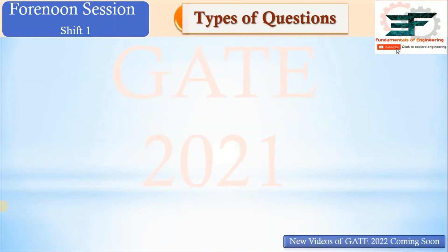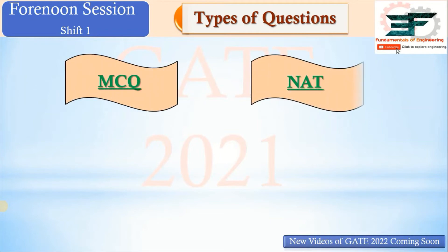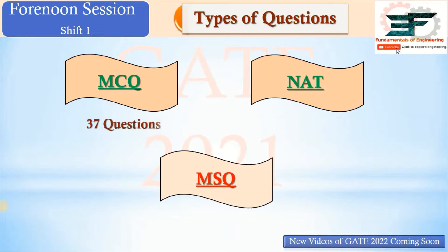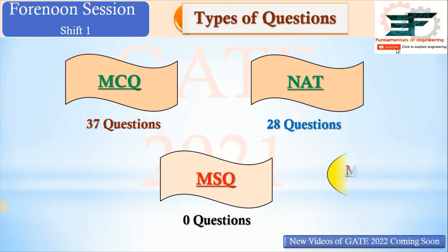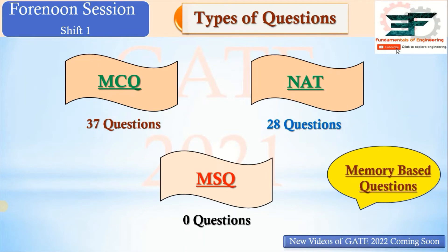For the afternoon session (shift two), there were again three types of questions: MCQ, NAT, and MSQ. Among those, 37 questions were MCQ, 28 questions were NAT, and zero questions for MSQ — so the afternoon session also had no MSQ questions. All questions were memory-based, meaning you need to have your concepts clear. If your basic concepts are clear, you can solve maximum questions.